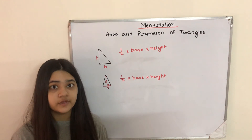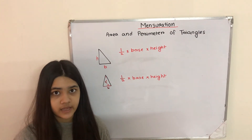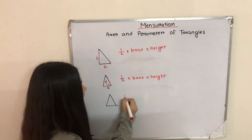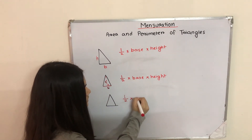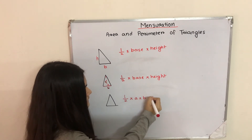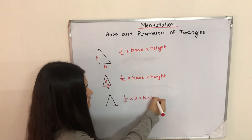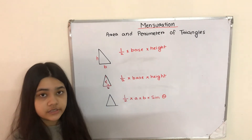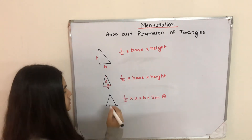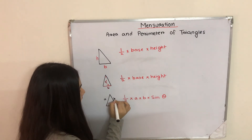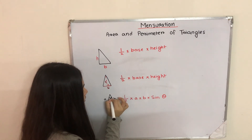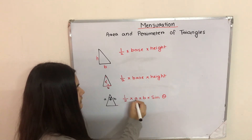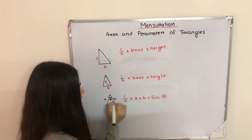Moving on, if we don't know the height of the triangle we can use the formula half into a into b into sin theta. In order to use this formula we need to know two sides and their included angle. So the formula is: half × a × b × sin theta.